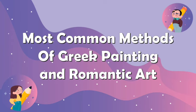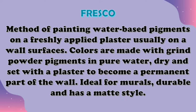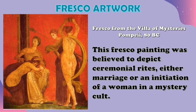Here are the most common methods that artists used in their paintings during the Greek and Romantic period. First is Fresco — a method of painting water-based pigments on freshly applied plaster, usually on a wall surface. Colors are made with ground powder pigments in pure water, which dry and set with the plaster to become a permanent part of the wall. It is ideal for murals, durable, and has a matte style.